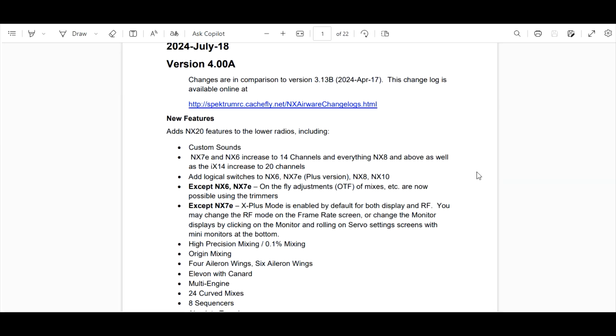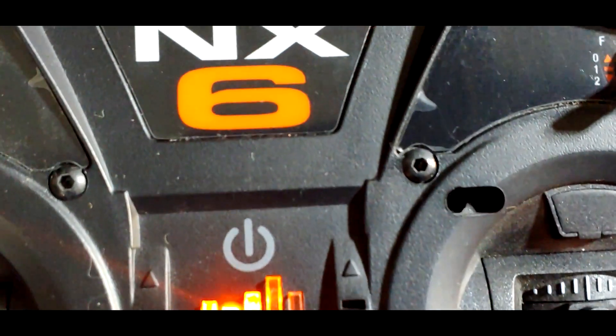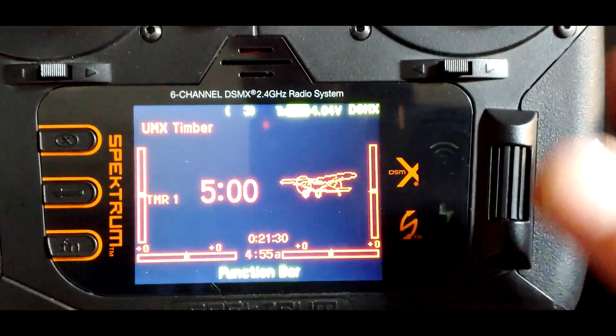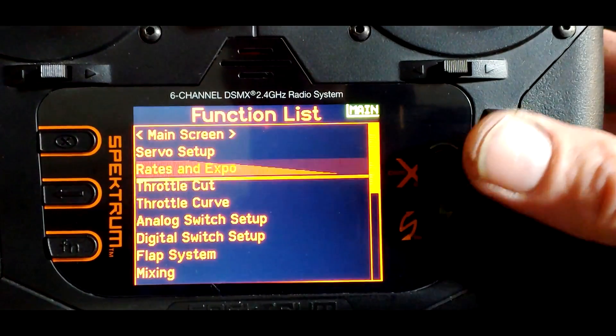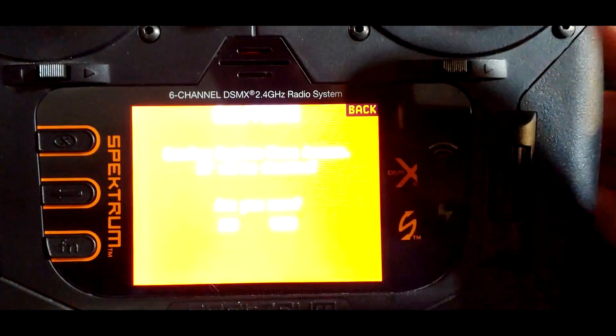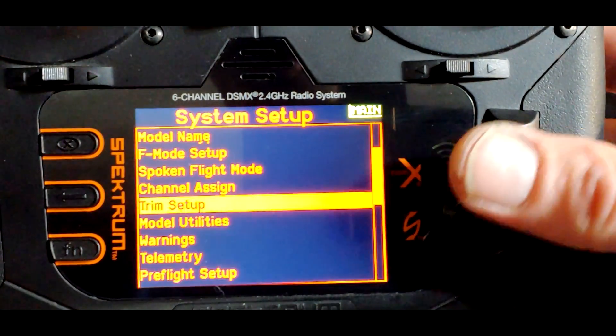So let's update the NX6. Alright, got the NX6 here. Let's update it. So we're going to go on down to System Setup and then down here to WiFi Utilities.